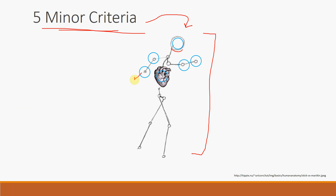Starting at the hands: this reminds us of Osler nodes and Janeway lesions — basically, immunological evidence that endocarditis is occurring. The heart is shooting off emboli to the distal parts of the body, manifesting as Osler nodes and Janeway lesions in the hands.